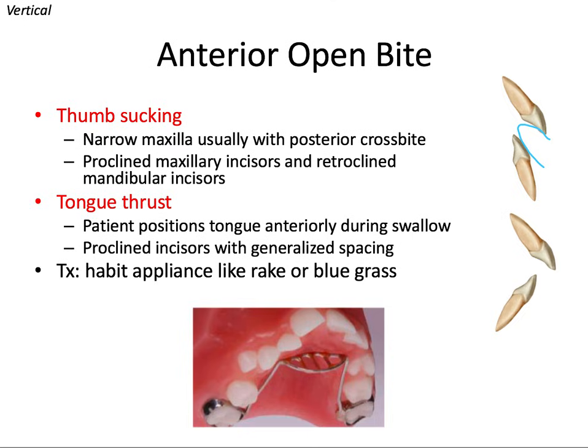Thumb sucking also produces an open bite, proclined maxillary incisors, and retroclined mandibular incisors to leave a pocket for the thumb. Comparing that to tongue thrusting — the tongue goes between the top and bottom teeth, pushing both arches forward, leading to proclined upper and lower incisors with generalized spacing as the teeth spread out, and of course an open bite as well. Kicking the habit involves a combination of patient motivation and a habit appliance like a rake or bluegrass appliance to interfere with either the thumb or the tongue.